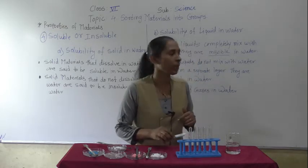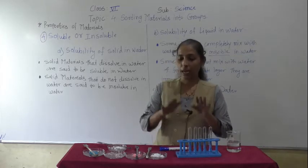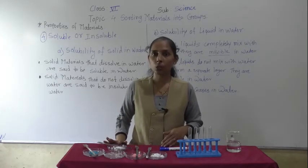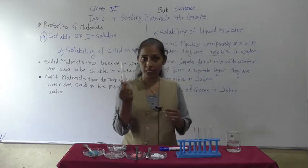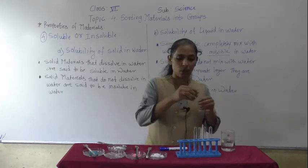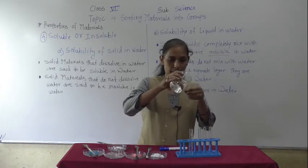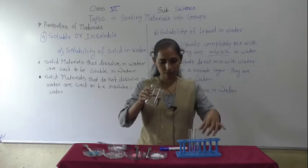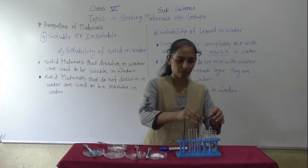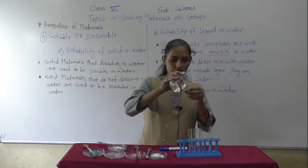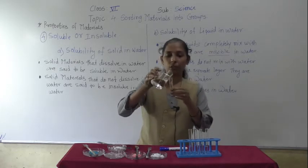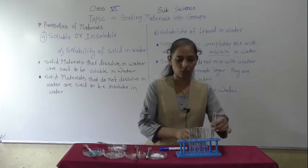Let's start the activity. I have taken five test tubes. I have some common salt, chalk powder, plastic pieces, copper sulphate, and washing soda. I will fill each test tube with the same amount of water. In each test tube we will add a different solid material, then observe each test tube to find out which solid materials are soluble and which are insoluble in water.